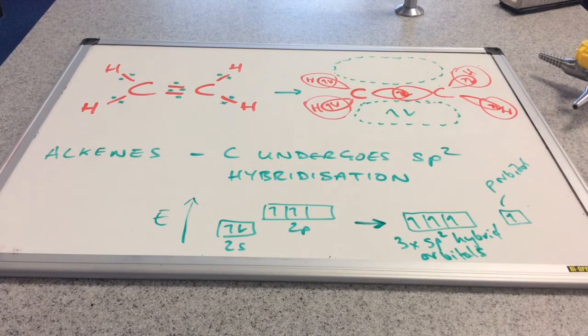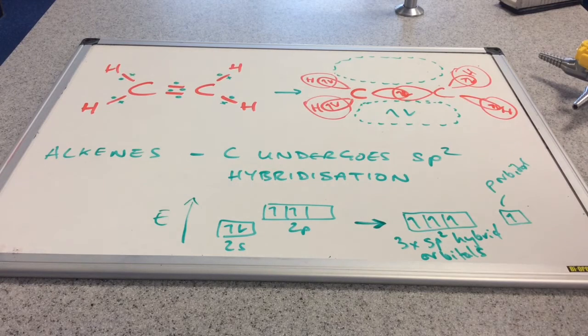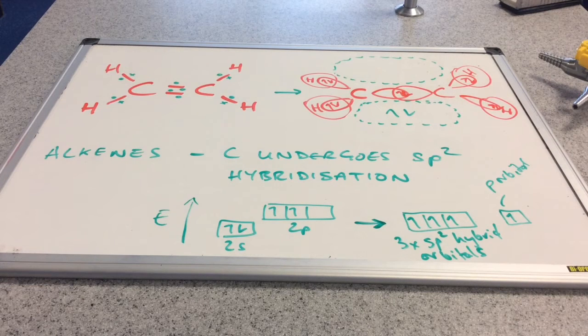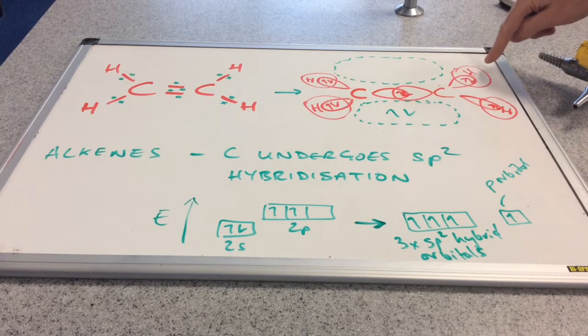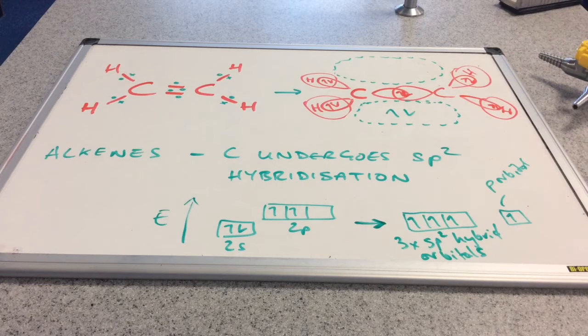So if we think about how these new orbitals, these new regions of space have been formed, they're actually different to sigma bonds. Remember sigma bonds are formed by the end-to-end overlap of the orbitals.